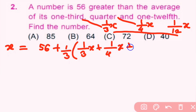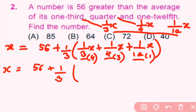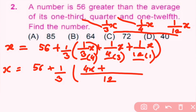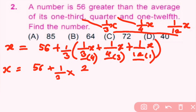So the average is: (1/3)x plus (1/4)x plus (1/12)x, all divided by 3. To add these, we make their denominators the same by multiplying — here by 4, here by 3, and here by 1 — giving a common denominator of 12. So we get 4x plus 3x plus x, all over 12, which is 8x over 12. Simplifying: 8x/12 divided by 3 gives 2x/9.